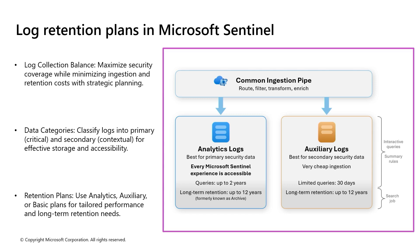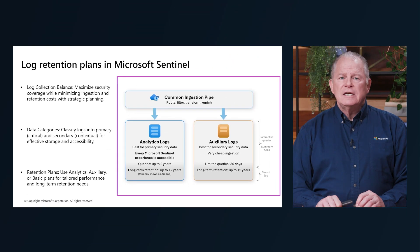Microsoft Sentinel offers various log retention plans to help you manage the data ingestion into your workspace. These plans are designed to maximize security coverage while minimizing cost. There are two main categories. Primary security data contains critical security values and is used in real-time proactive monitoring, scheduled alerts, and analytics to detect security threats, and needs to be readily available in near real-time. Secondary security data is supplemental, often found in high-volume verbose logs. While it has limited security value, it provides added richness and context to detections and investigations, and should be accessible on demand as needed.